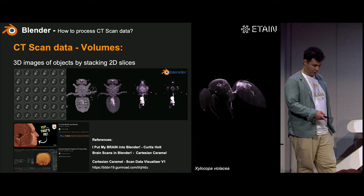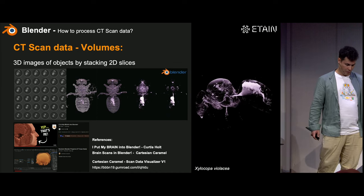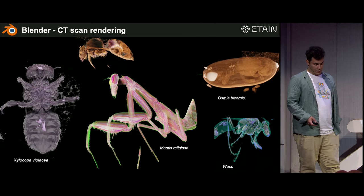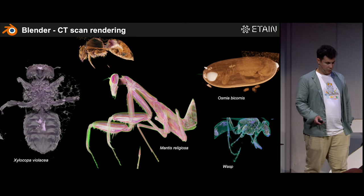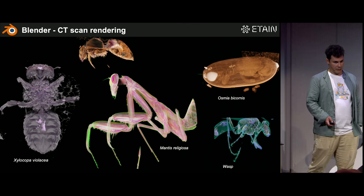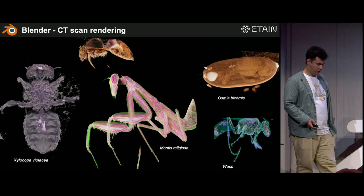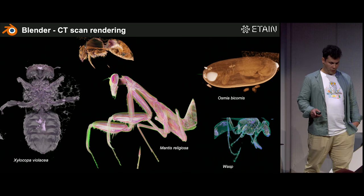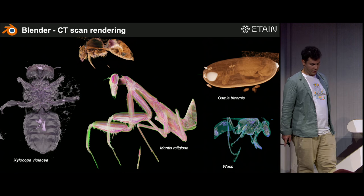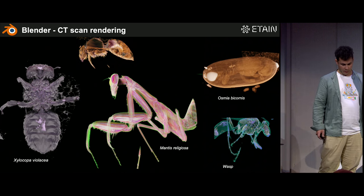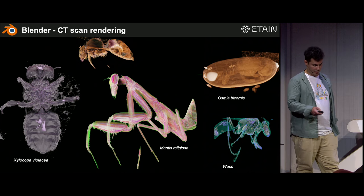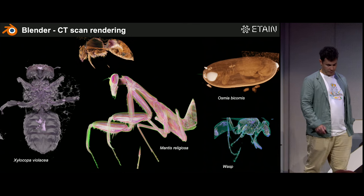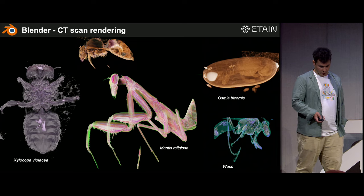I learned about this through YouTube tutorials. One disadvantage of CT scans is that there is no color information, so the coloring here is artificial — I applied random colors to distinguish different structures. In this case of Drosophila, for example, I made artificial coloring so I could identify the exoskeleton or the muscles. You can do that for wasps and other animals as well.